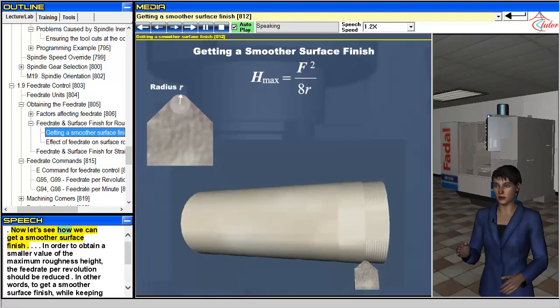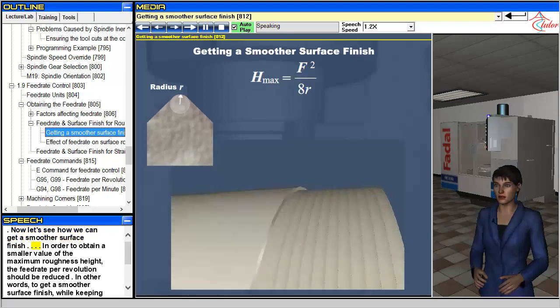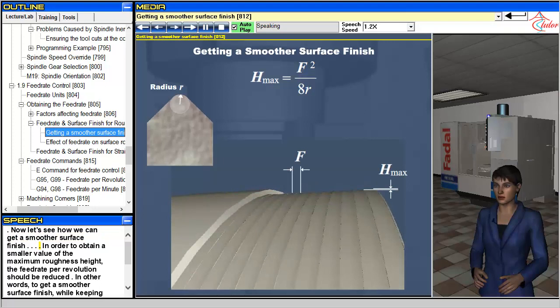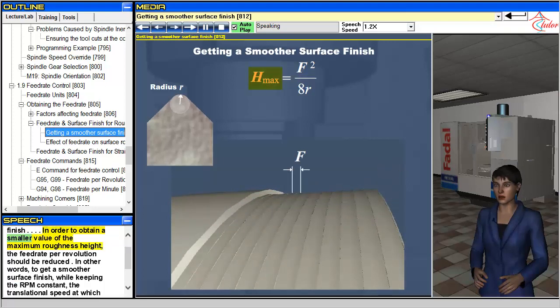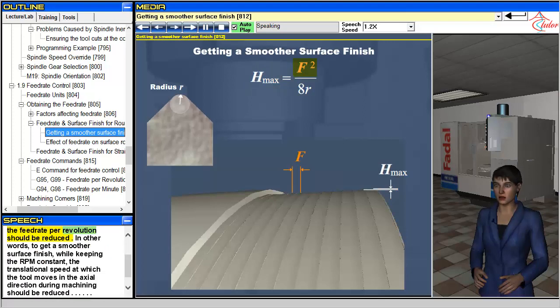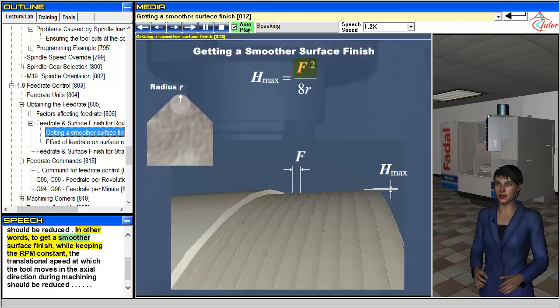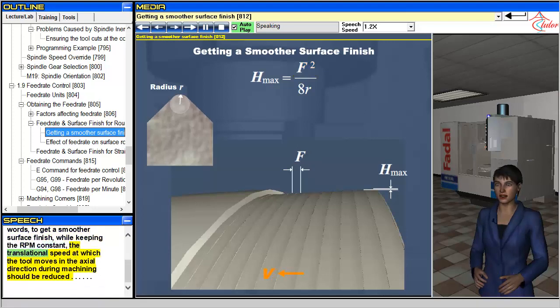Now let's see how we can get a smoother surface finish. In order to obtain a smaller value of the maximum roughness height, the feed rate per revolution should be reduced. In other words, to get a smoother surface finish while keeping the RPM constant, the translational speed at which the tool moves in the axial direction during machining should be reduced.